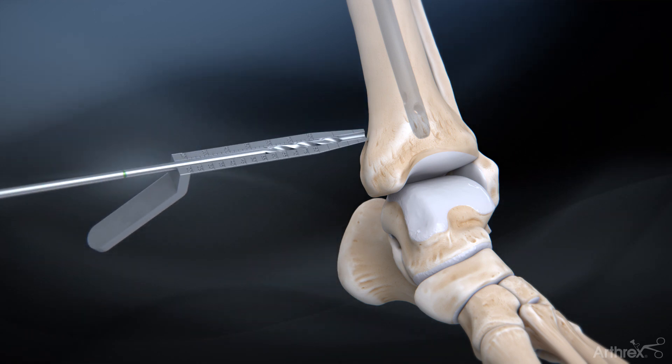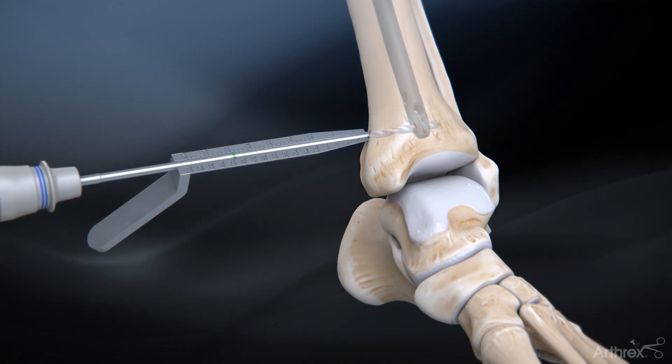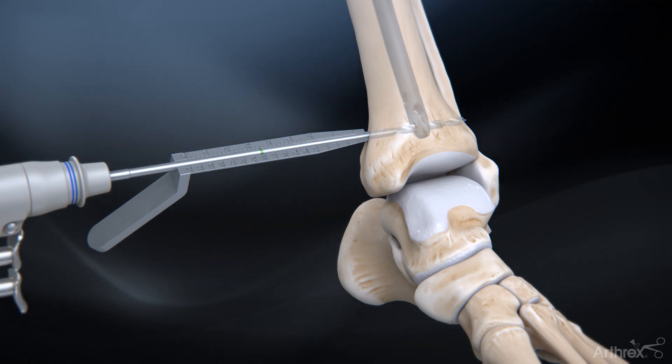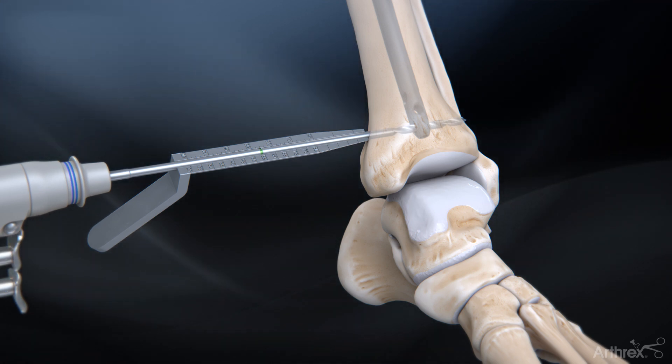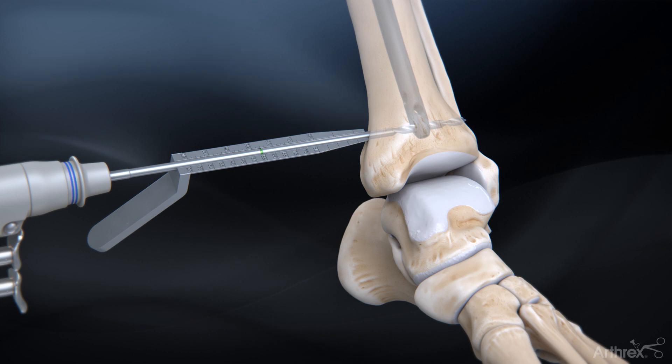Drill bicortically through the bone using the 4.0 mm freehand drill. Measure the screw length using the distal depth gauge and the depth mark at the 4.0 mm freehand drill.